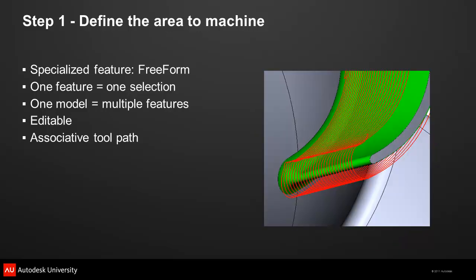In this example, toolpath is applied to the blade feature. When I edited the feature to remove a face, the system updated the toolpath for me.